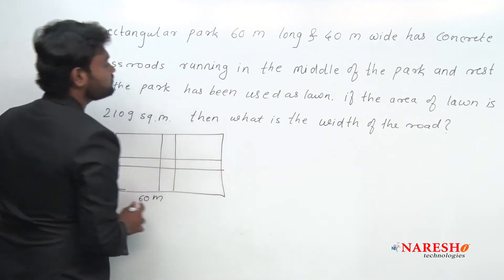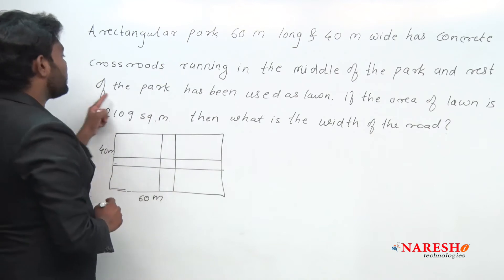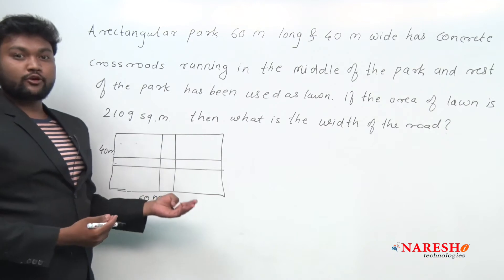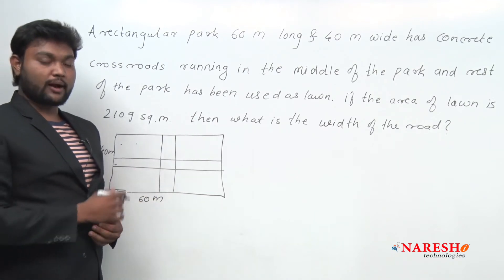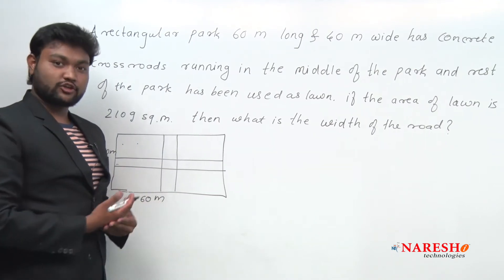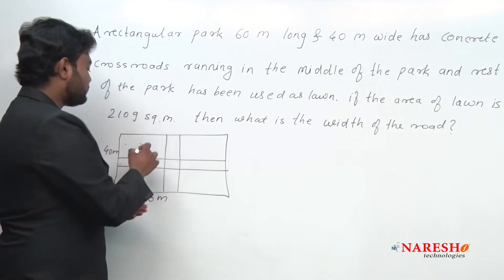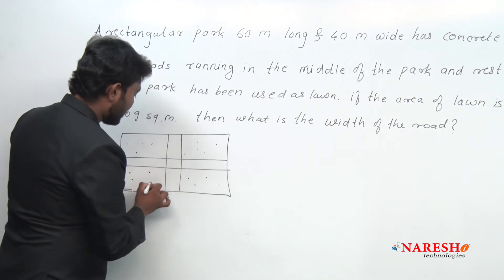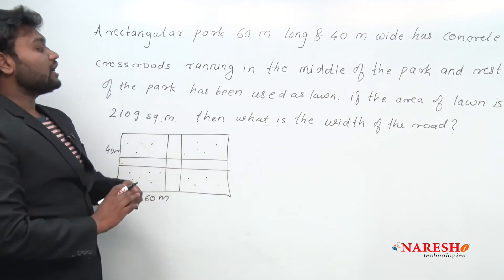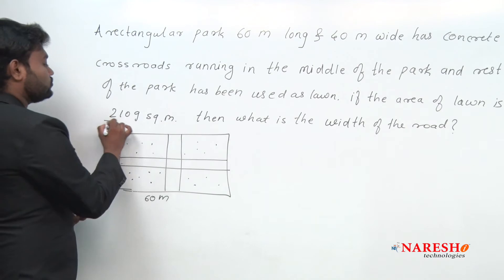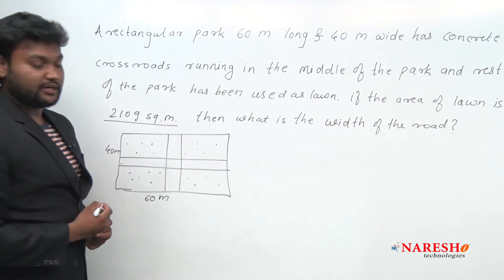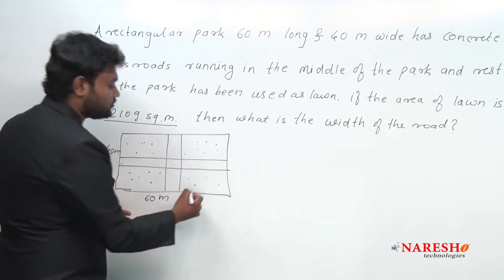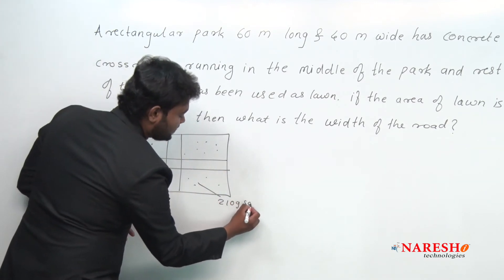The rest of the park has been used as lawn — meaning apart from the two crossroads, whatever the rest of the park we are left with, that is used as a lawn. If the area of lawn is 2109 square meter, that means this complete area without the roads is 2109 square meter.